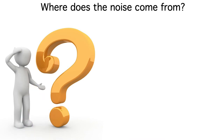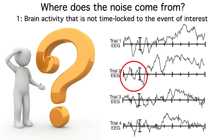There are three main noise sources. First, the EEG contains a ton of genuine brain activity that just isn't time-locked to the stimulus. For example, you can see alpha band oscillations here during the pre-stimulus interval. Because they're present before the stimulus appears, they're clearly not triggered by the stimulus, so they add uncontrolled variability to our average ERPs.